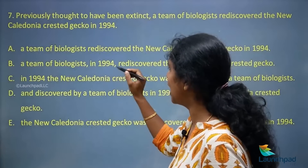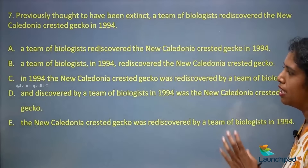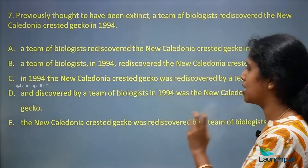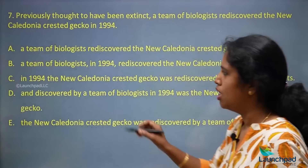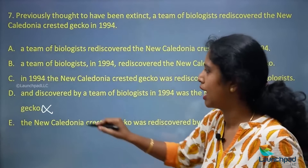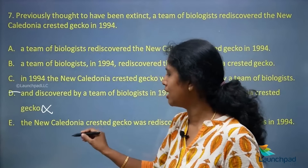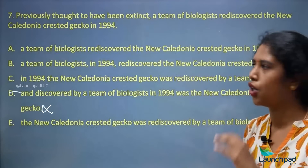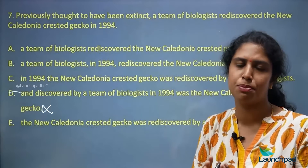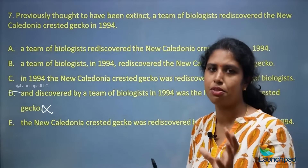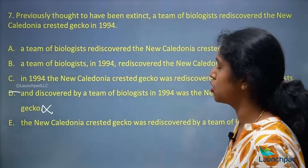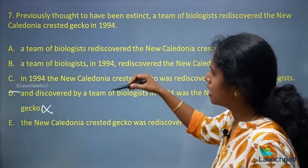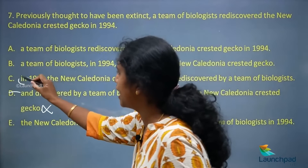Third option: 'In 1994, the New Caledonian crested gecko was rediscovered by a team of biologists.' Fourth: 'Discovered by a team of biologists in 1994 was the New Caledonian crested gecko' — I can eliminate this one as 'and' starting a sentence is wrong. Reading each: a sentence should have subject, verb, and object. Either 'a team of biologists' or 'the New Caledonian crested gecko' is the subject. We can eliminate the option starting with 'in 1994.'